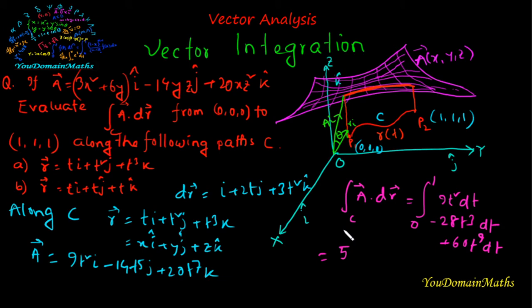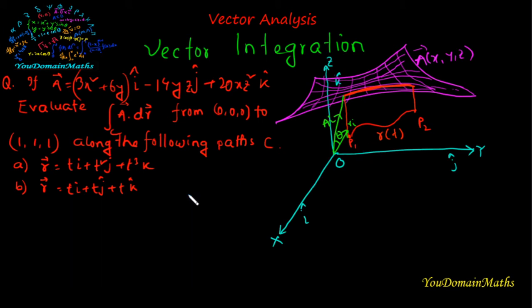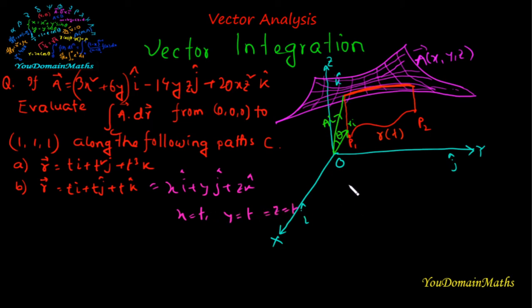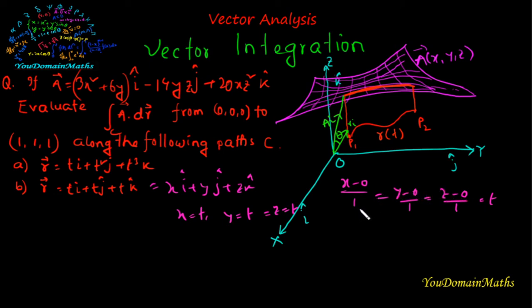Now we will look at the second path: r = ti + tj + tk. This is a straight line. Comparing to xi + yj + zk, we get x = t, y = t, z = t. This can be written as (x−0)/1 = (y−0)/1 = (z−0)/1 = t, which is a straight line passing through (0,0,0) with direction ratios 1:1:1.